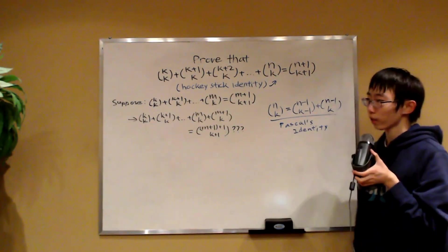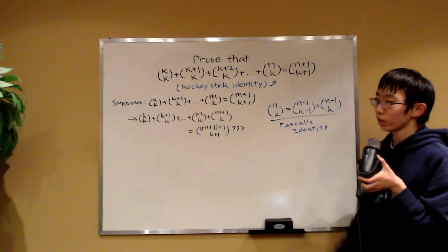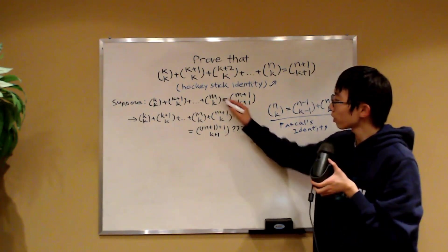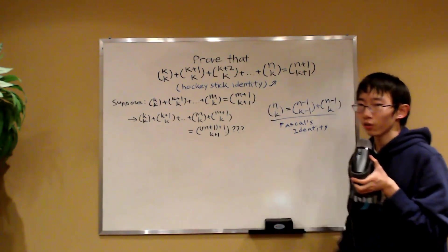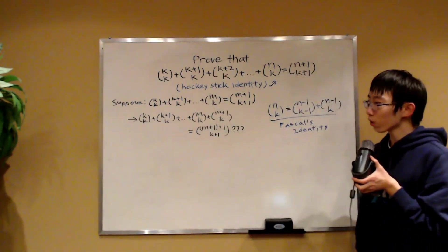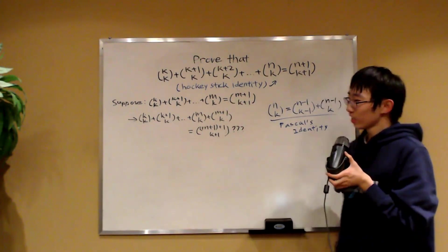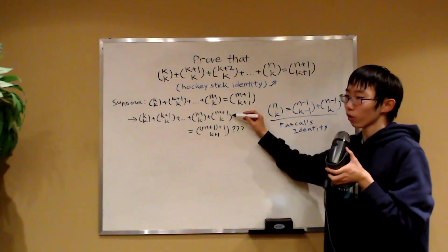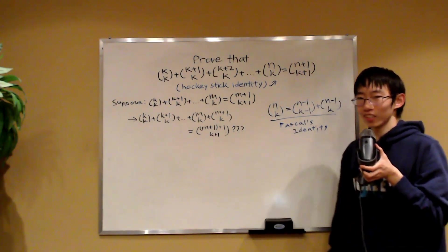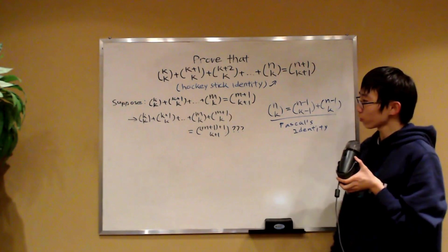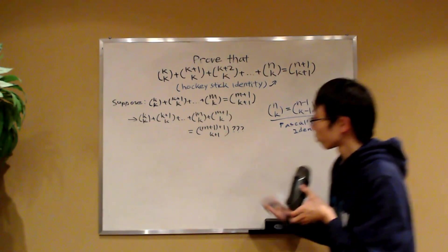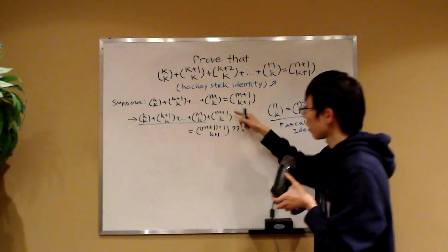Now we need to move on to our inductive step to prove this identity. First off, we're going to assume that there exists a positive integer m such that this identity is true. Now we already proved that when m is equal to k plus 1, it works. So we know that there exists such an m. So does that mean that this identity will also work for m plus 1? Now that's what we need to prove. So let's do that. Firstly, we've assumed that for m, it works.